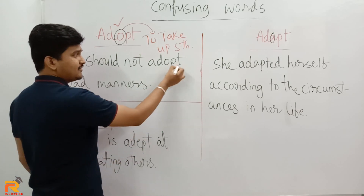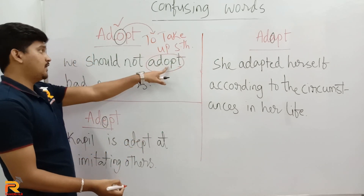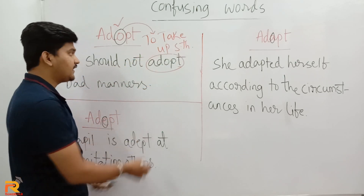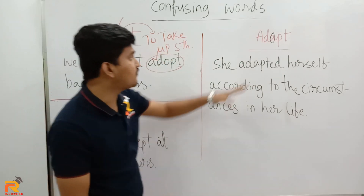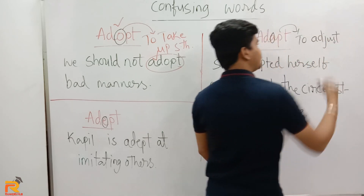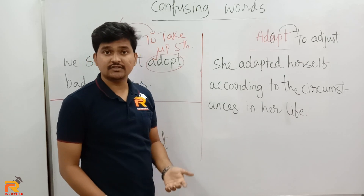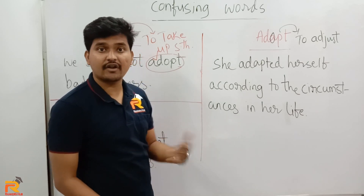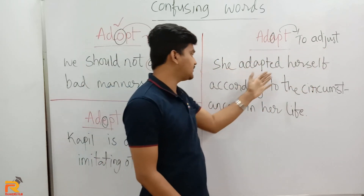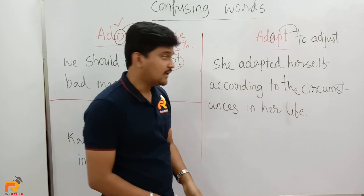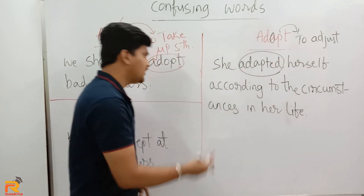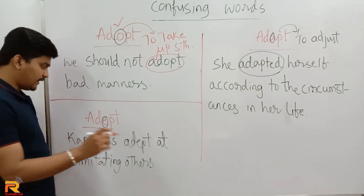What is the meaning of adapt? Adapt means to adjust. We always adapt ourselves to new circumstances, new situations, new places, or a new environment. The word is used in the sentence: 'She adapted herself according to the circumstances in her life.' The meaning of adapt — to adjust — is easily understood and widely used.